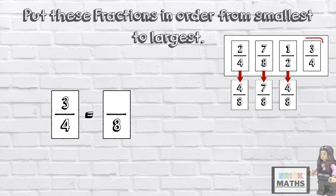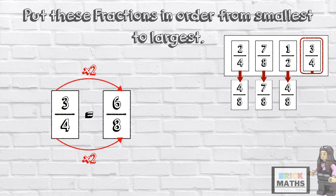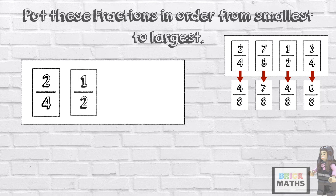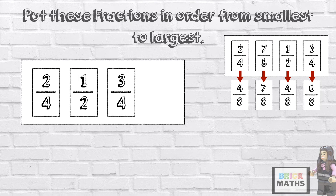And the last fraction is 3 quarters. So 4 times 2 equals 8, and 3 times 2 equals 6, so 3 quarters is equivalent to 6 eighths. Now that they all have the same denominator, we can put them in order by looking at the numerators. The smallest fraction is 4 eighths, which were 2 quarters and 1 half. The next fraction is 6 eighths, which was 3 quarters. And finally, the largest fraction is 7 eighths.